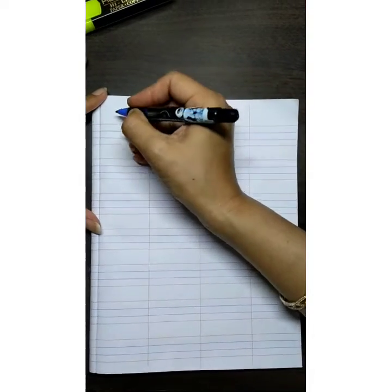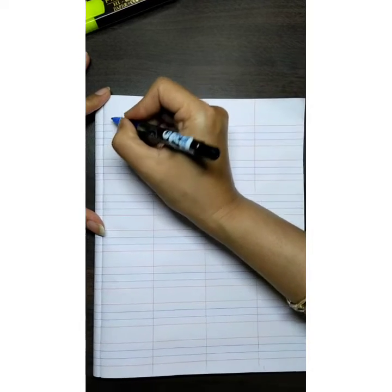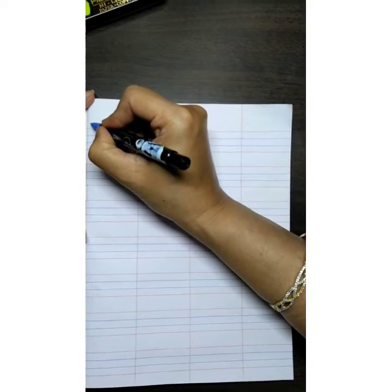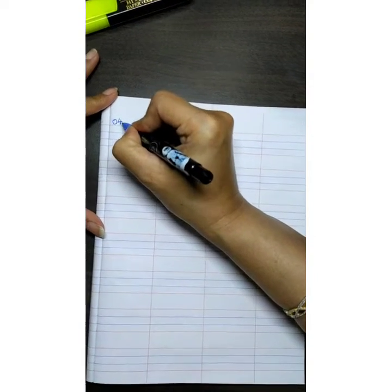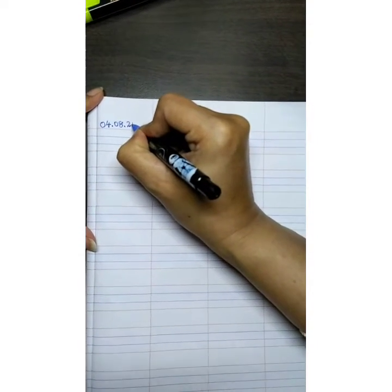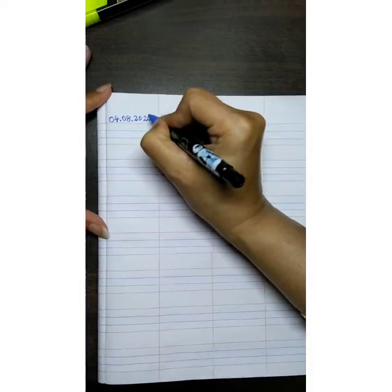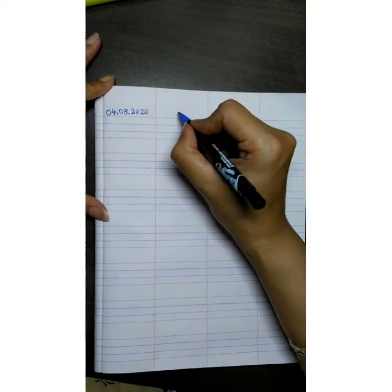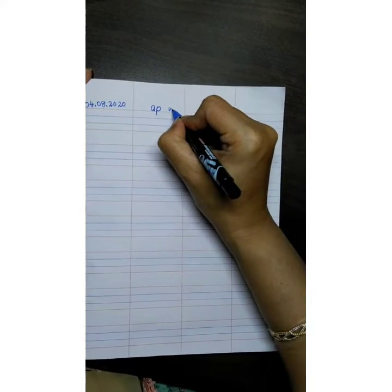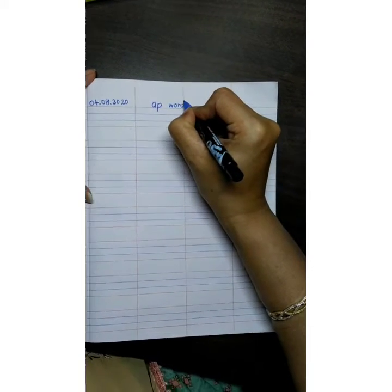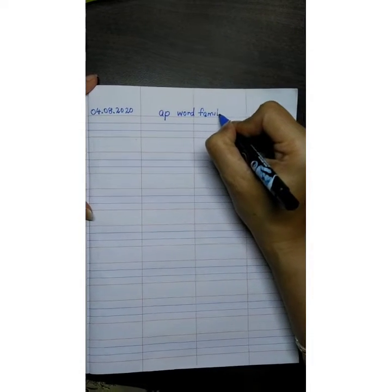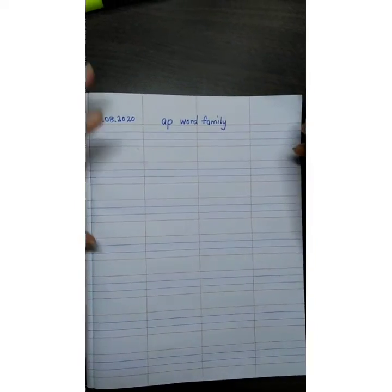Now you will take a new page and you will write today's date. We have begun with the new month so you will write 04.08.2020 and since we are doing the Ap word family, here we will write Ap word family. Yes, here we will write Ap word family.